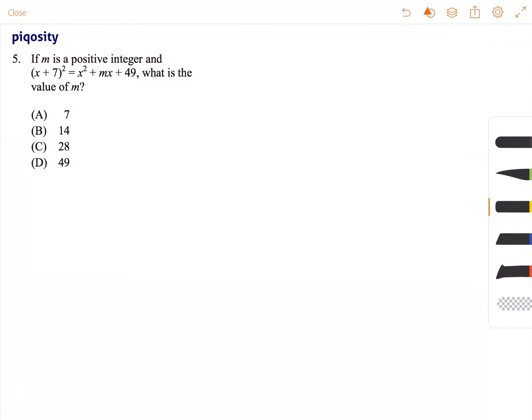This is Stephen and this question is dealing with your knowledge of multiplying binomials together, also known as FOIL: first, outer, inner, last.